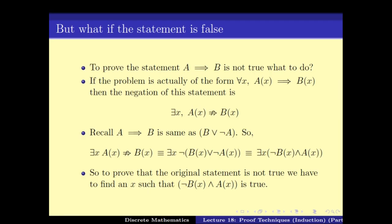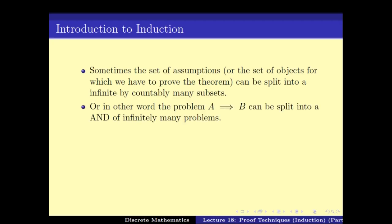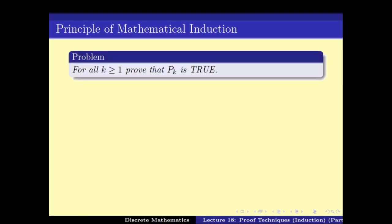Other than those proofs, we also looked at proof by induction, which is what we have been doing for the last week. The idea is again to split up problems into smaller problems, but here we split up the set of situations into possibly infinitely many subsets. This means A implies B gets split into infinitely many problems. Usually the subproblems are indexed by some parameter, so A implies B becomes something like P1, P2, and so on to infinity — that is, for all k greater than or equal to 1, prove that Pk is true.